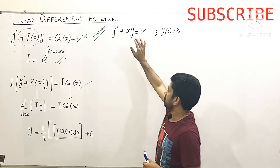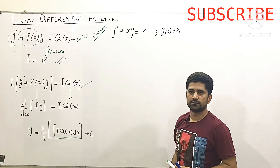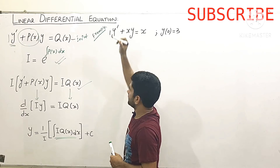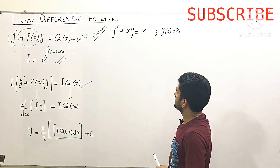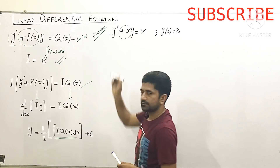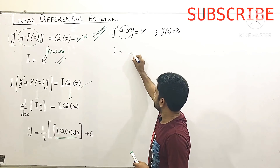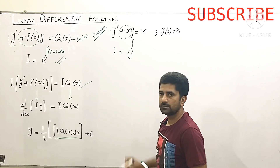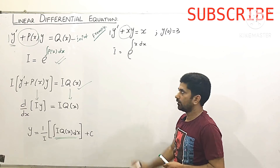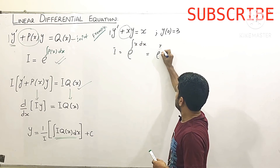Let's do an example. We have y' + x·y = x with initial condition y = 3 when x = 0. First we see that the coefficient of y' is 1. Then we find P(x), which is the term present with y, so P(x) = x. We write the integrating factor I = e^(∫x dx).